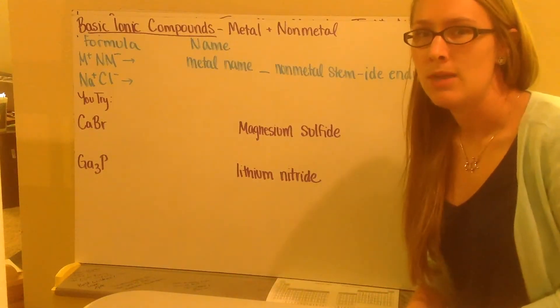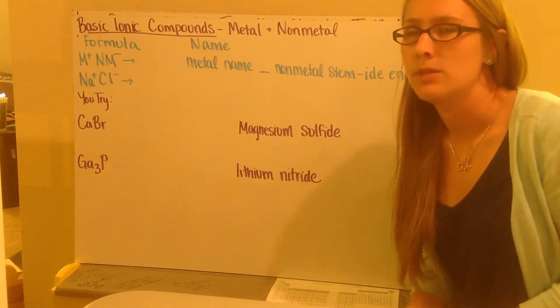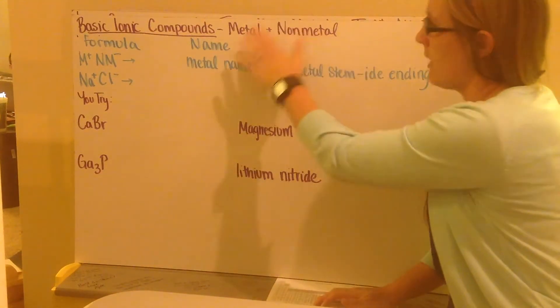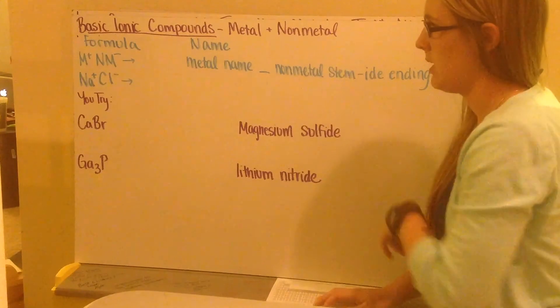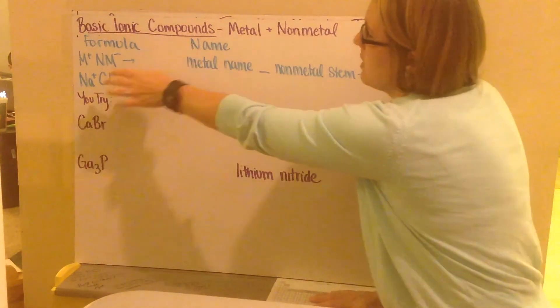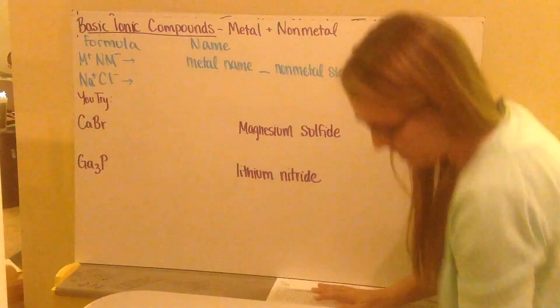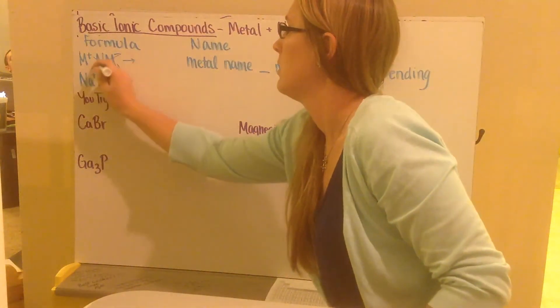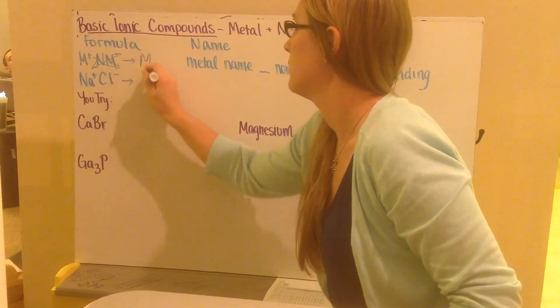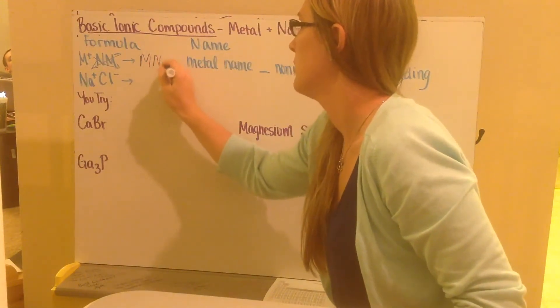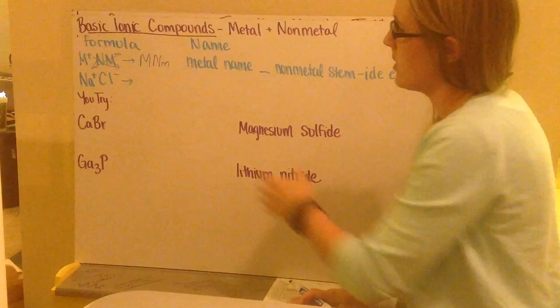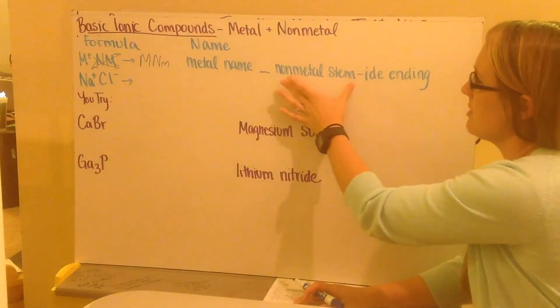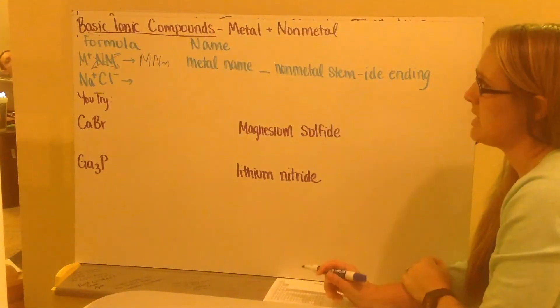This video is on naming ionic compounds and writing formulas for names. A basic ionic compound is just a regular metal with a regular non-metal. Our formula is going to be our metal with our non-metal. We are going to criss-cross our charges down to get metal, non-metal. The name for these is going to be the metal name with a space and then the non-metal stem of the element with that -ide ending.